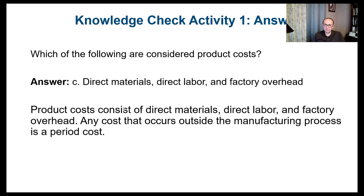Product cost consists of direct material, direct labor, and factory overhead. Any cost that occurs outside the manufacturing process is a period cost. So the product cost components are direct material, direct labor, and factory overhead.